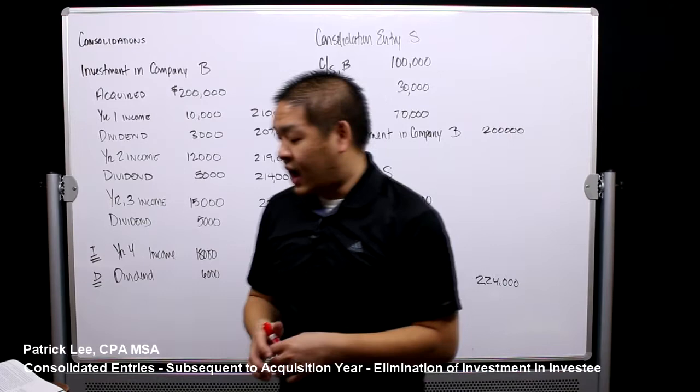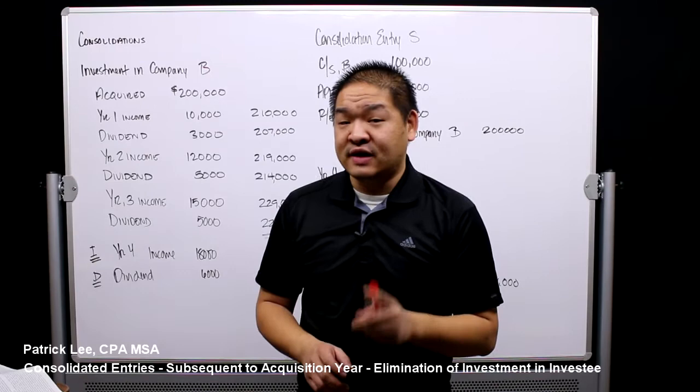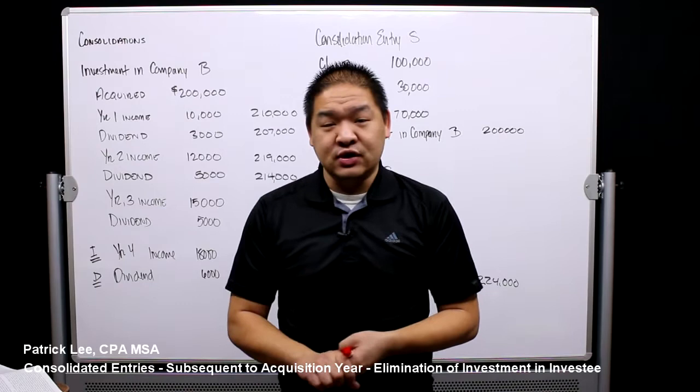The reason we focus on entry S is that consolidation entries A, I, and D for the most part stay the same year after year. There is one difference with consolidation entry A, but your book shares that with you.